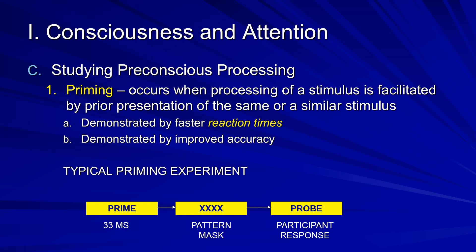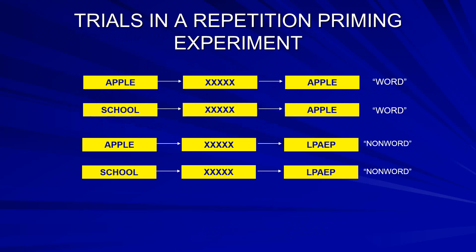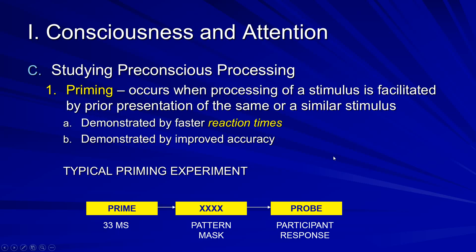What we can do is infer that you have processed a previous stimulus even though you won't consciously be aware of the fact that it's been presented — and we see that by faster reaction times and improved accuracy. In a typical priming experiment, we'll have some sort of prime which appears for about 33 milliseconds, which is the longest we can go. That's followed by a backward pattern mask. The purpose of this backward pattern mask is to remove the prime from sensory memory — that is, we have to sort of overwrite it. If we did not include this backward pattern mask, even though it wasn't still on the screen, you would actually still be able to see it for a brief period of time afterwards.